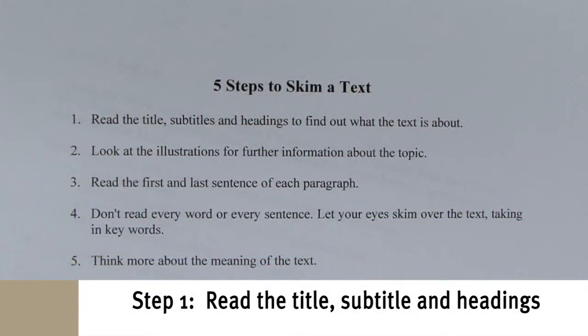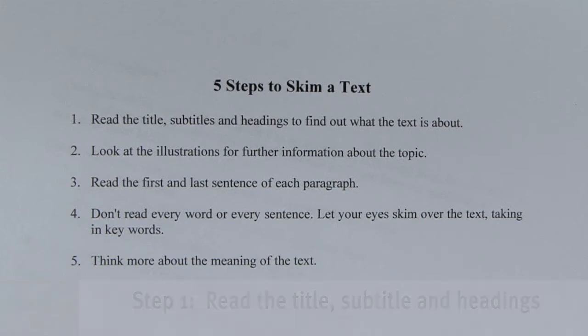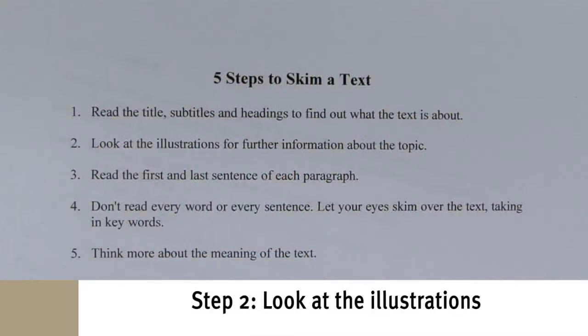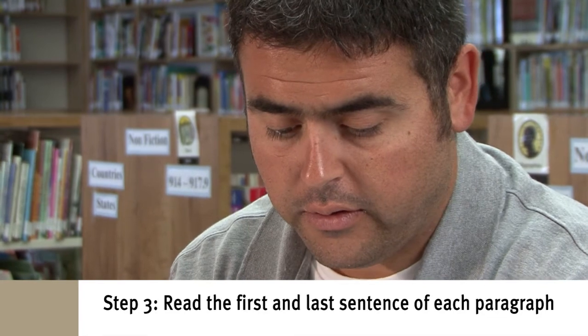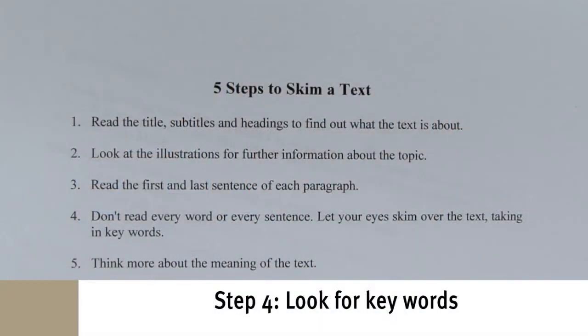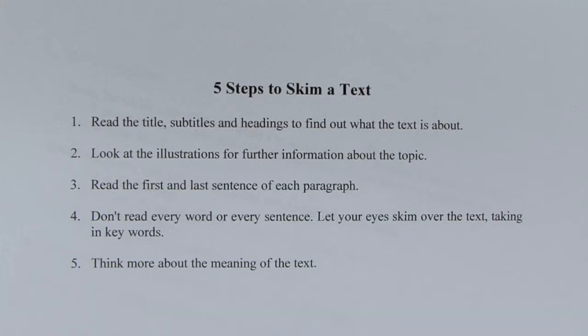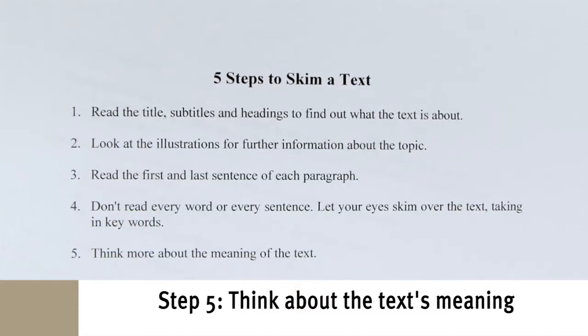So the first step is — can you read what the first step is? Read the title, subtitles, and headings to find what the text is about. Let's actually read through all five steps and then we'll go and do each one. Step two: Look at the illustrations for further information about the topic. Step three: Read the first and last sentence of each paragraph. Step four: Don't read every word or every sentence — let your eyes skim over the text, taking in the keywords. And step five, the last one: Think more about the meaning of the text.